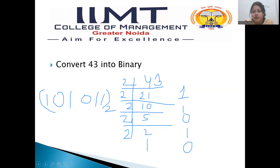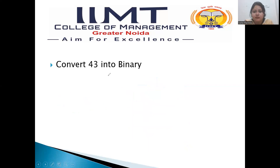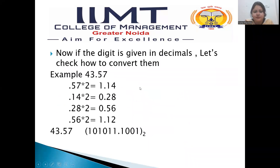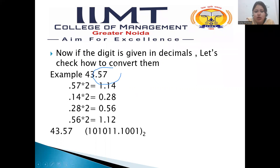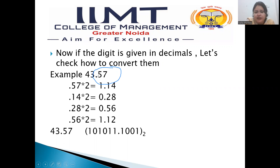Now let's move forward. How can we check if we have converted it right — the examiner could also ask to convert a binary number into decimal. If the digit is given in decimal, I have already shown how to convert 43. But if the examiner has given a number like 43.57 and asked to convert it into binary, we handle it in two parts. The integer part 43 is done the same way as shown. For the part after the decimal point, we use a different procedure — we will use multiplication.